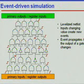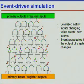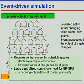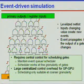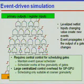What is our event-driven simulation? It uses a levelized netlist where an input value change creates a new event, and this event propagates if the output of a gate changes. This requires central control for scheduling gates, and the scheduler needs to maintain an event queue. The scheduler should also work at a fine granularity; otherwise, it will cause grid overhead for the GPU, which means the performance of our simulation will be reduced. Our project needs to find a fine granularity for this scheduling.